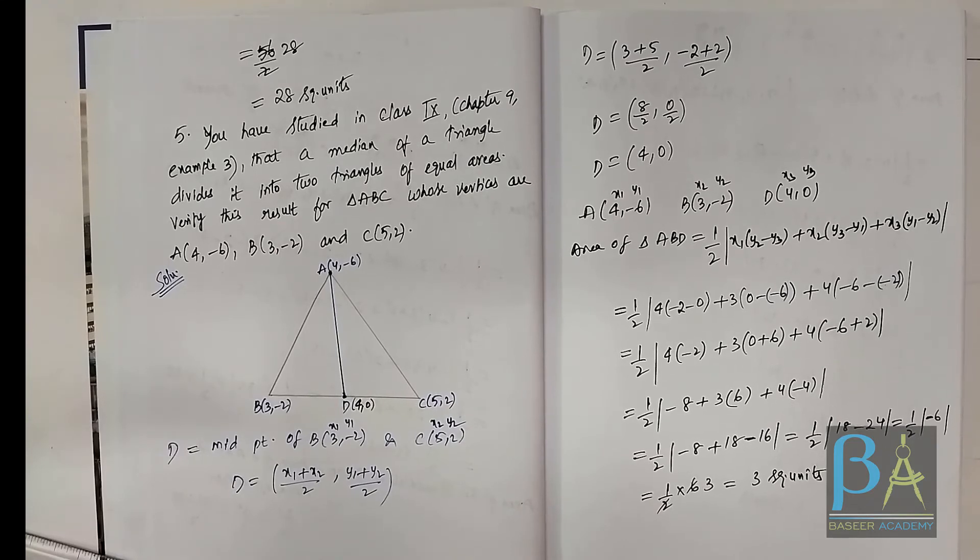With this we have completed this chapter. I hope you understood how to find the area of a triangle when its vertices are given. If you have any questions, please let me know in the comment section. Do let me know which chapter you'd like me to cover next. If you find the video helpful, please subscribe and share. We have completed the entire Chapter 7, Coordinate Geometry, from CBSE Class 10 syllabus. Have a great day ahead — goodbye!